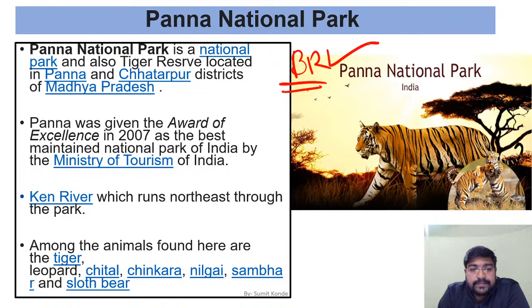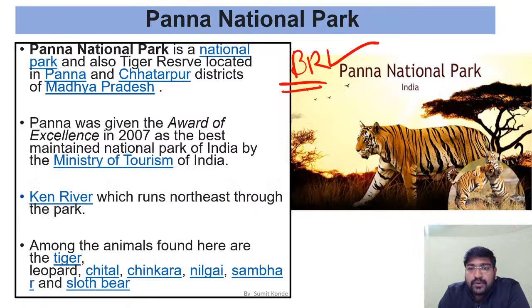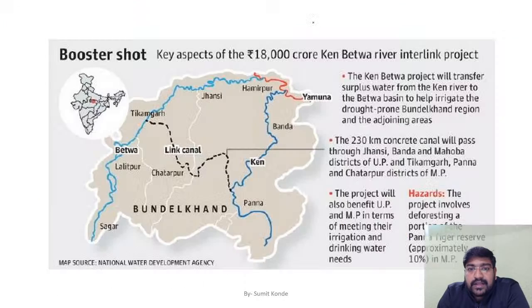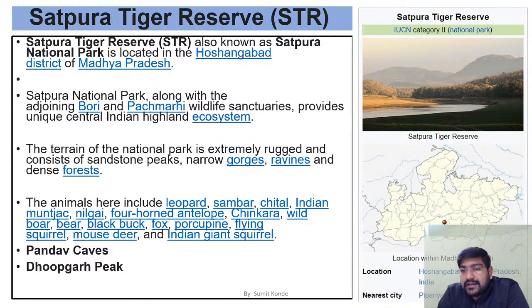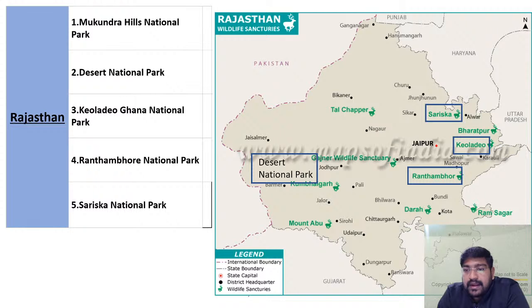In last lecture we also covered Kanha, Baiga tribes, Madho National Park plus Sanjay National Park which is the smallest biosphere reserve of India. Then Kane-Betwa link project — the Betwa river flows from the Panna region, so near Kane and Betwa you get Panna National Park or Panna Biosphere Reserve.